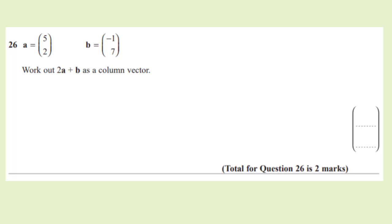So question of the day, we have a vector question. A equals 5, 2. B equals minus 1, 7. Work out 2a plus b as a column vector.